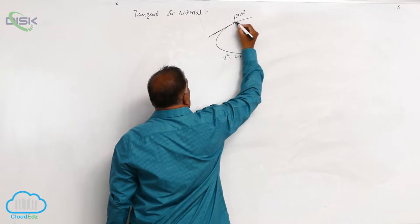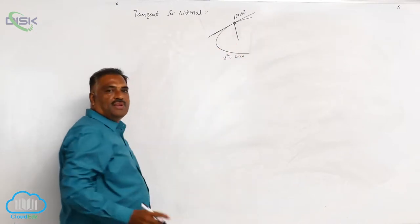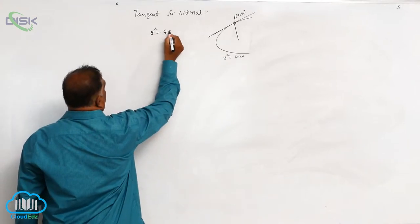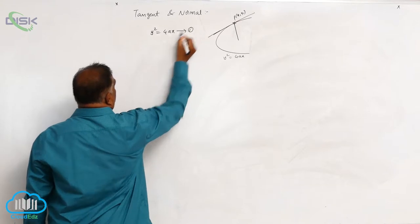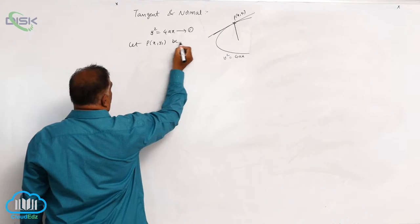At this particular point, we need to find out the tangent as well as normal. First, y square equal to 4ax is the parabola equation. Now, let P x1, y1 be any point.